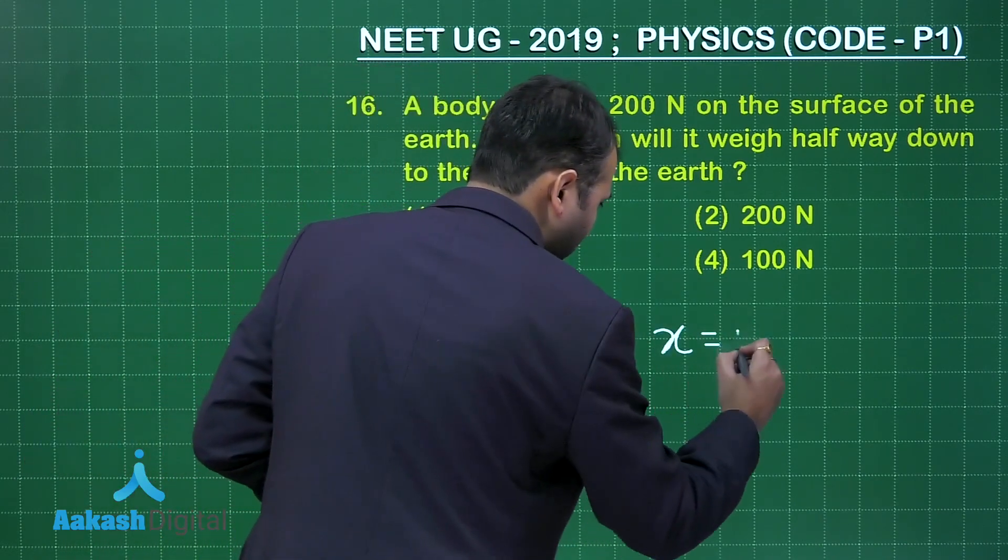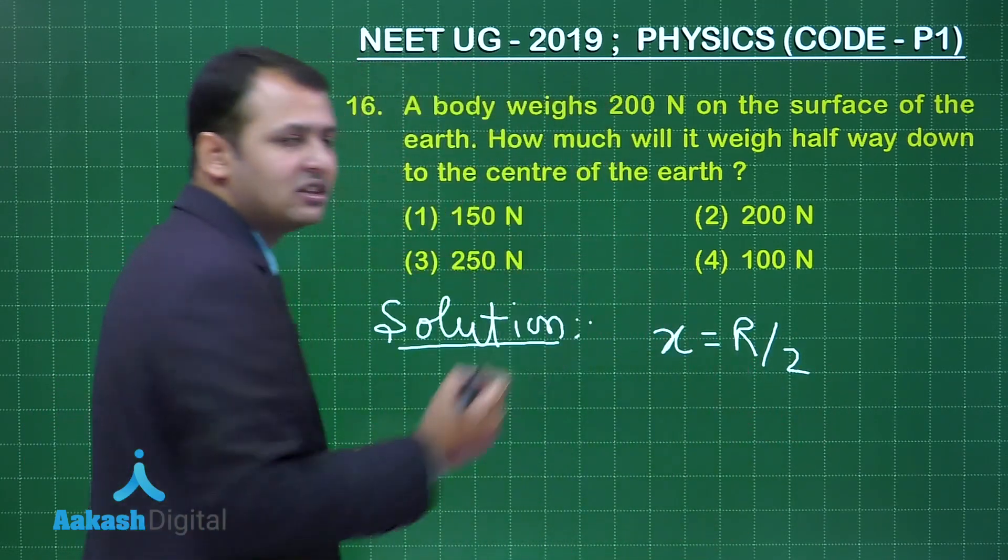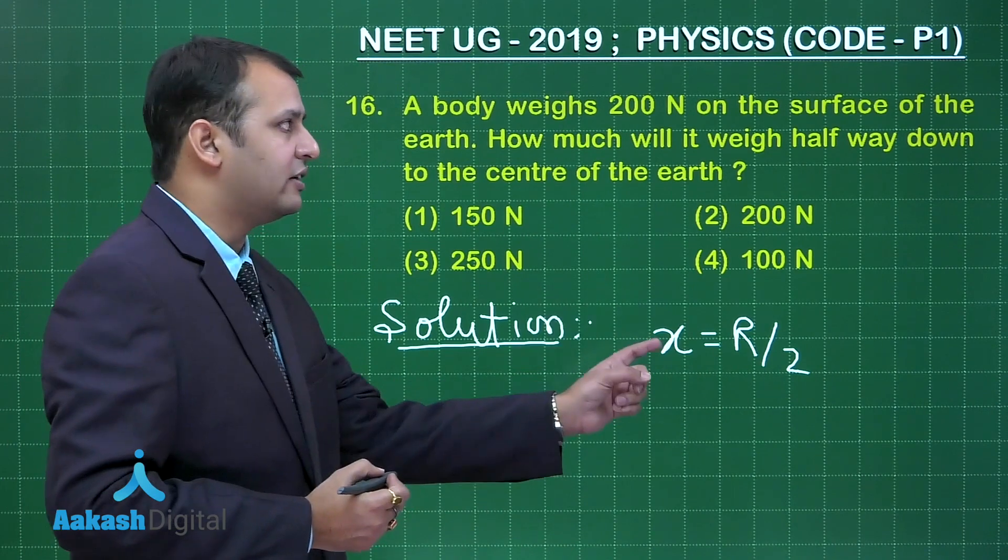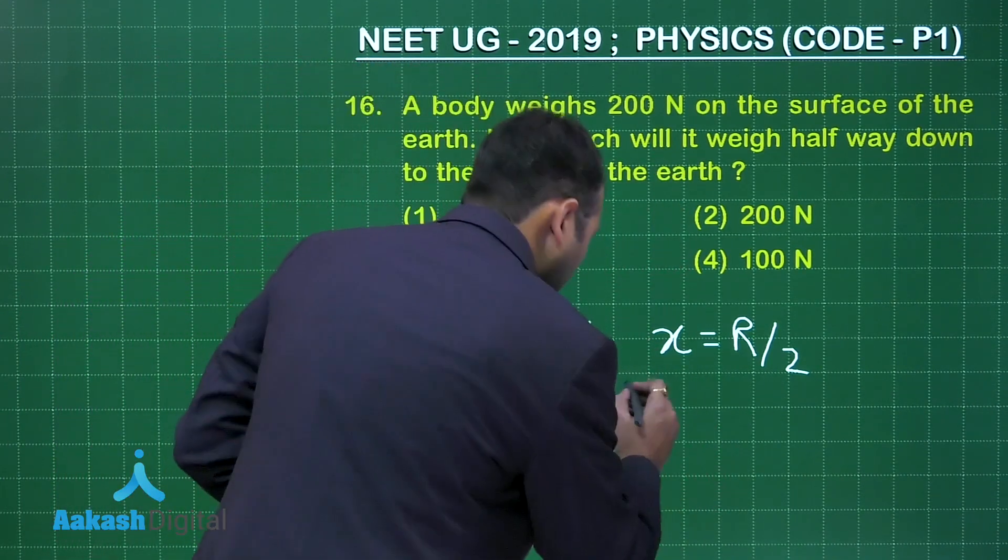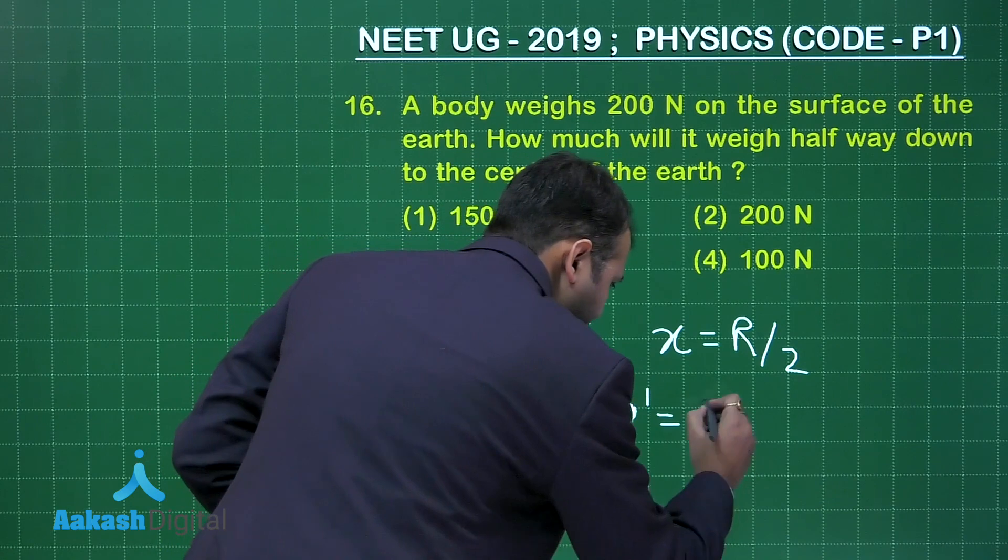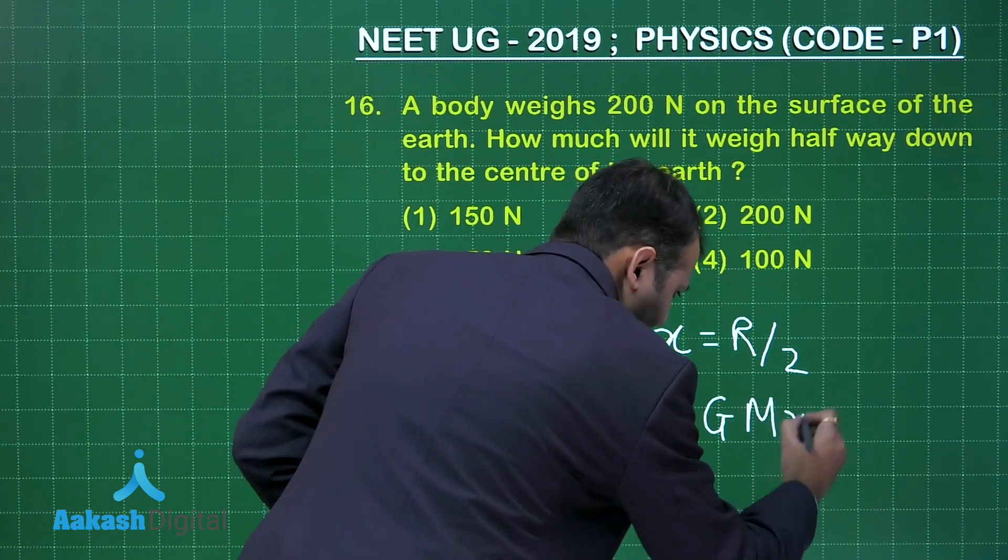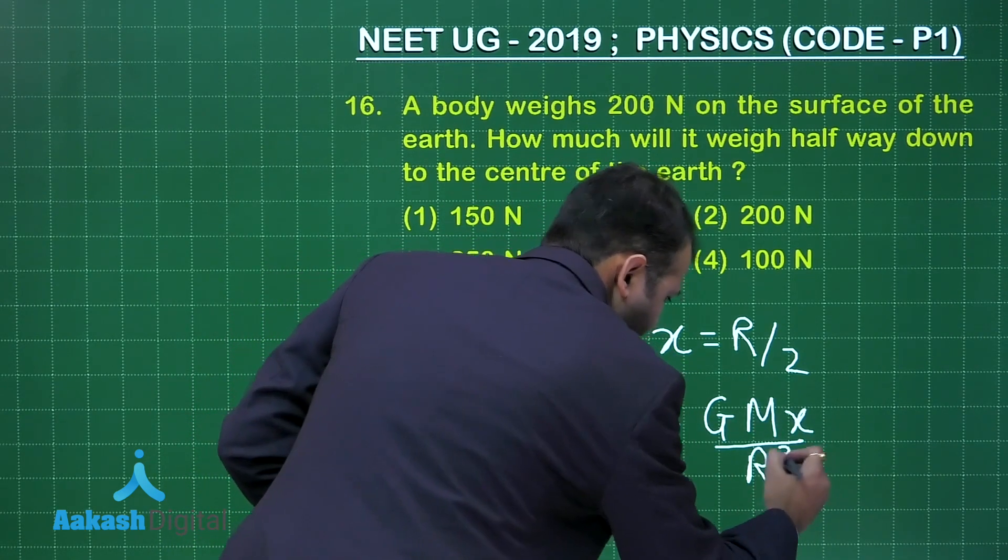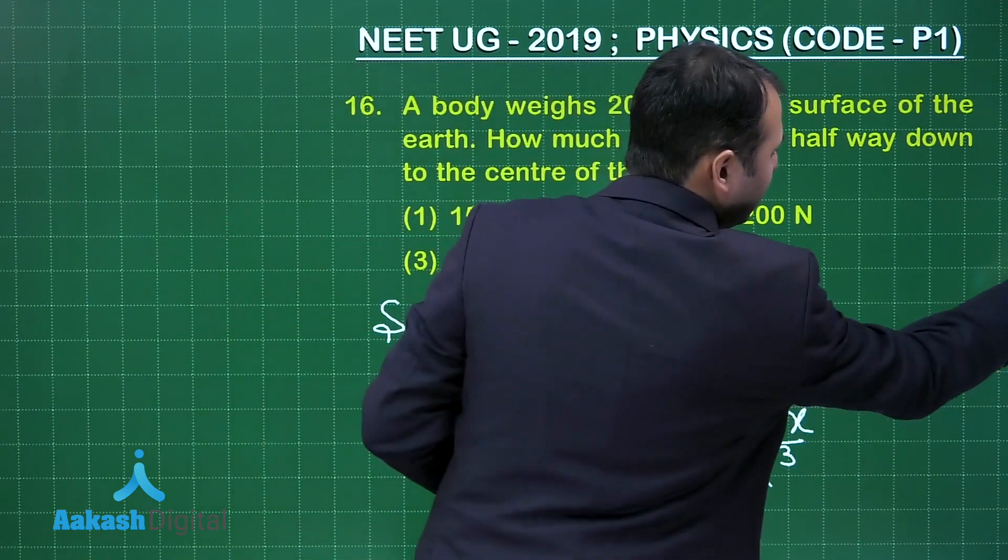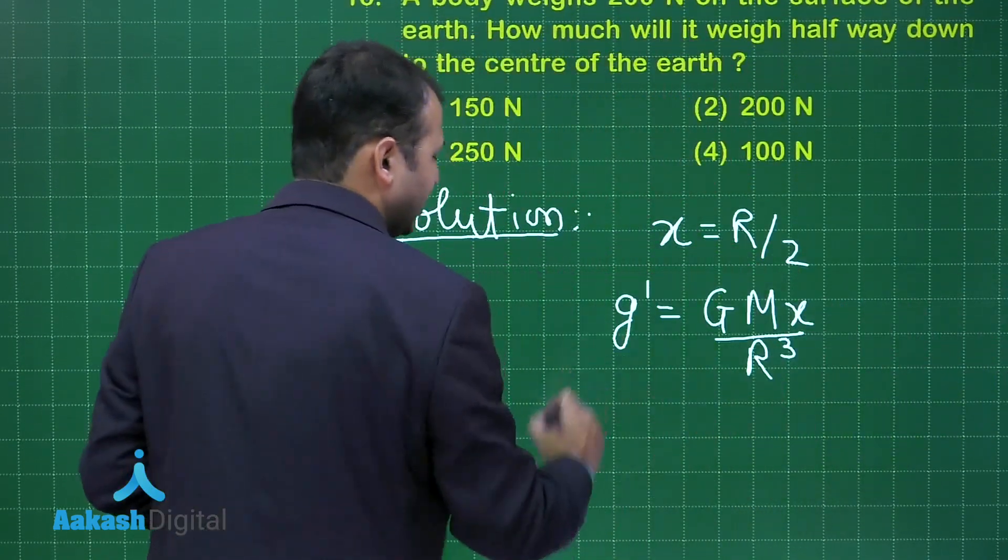As per the question, if you observe, you will get X would be equal to R by 2, where X is the distance of the body from the center when it has moved to halfway down. So G dash at this position will be GMX upon R cube. If you put down the value of X, you will get the answer of G dash.